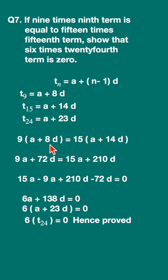You will get 9a plus 72d equals 15a plus 210d. Rearranging: 15a minus 9a plus 210d minus 72d equals 0. This gives 6a plus 138d equals 0.